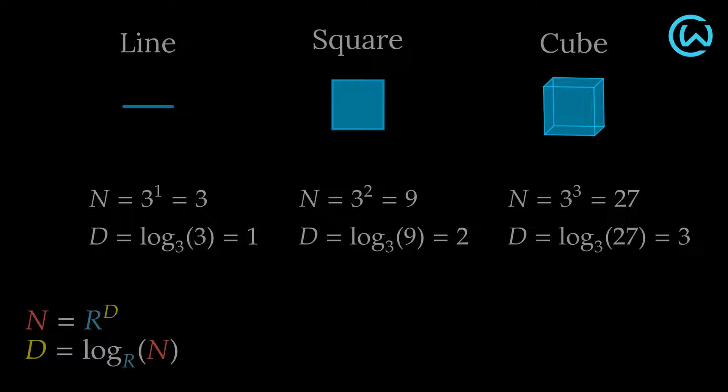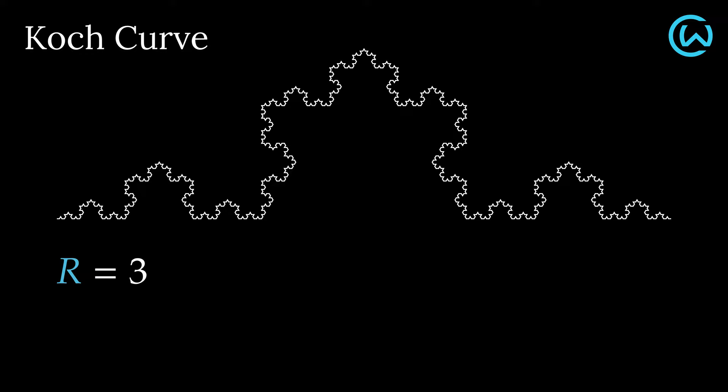Going back to the Koch curve, when scaled by a factor of 3, the Koch curve consists of 4 unscaled copies of itself from the previous level.